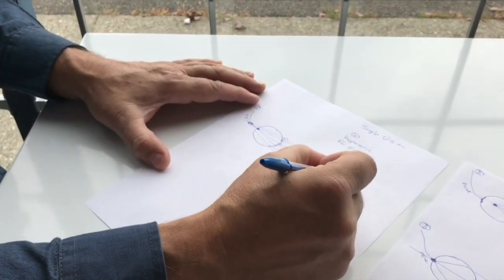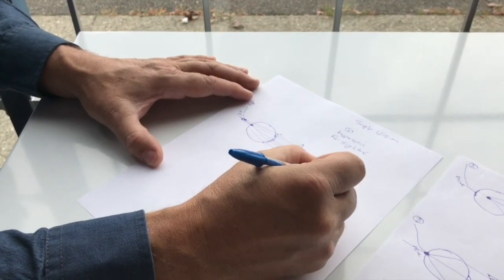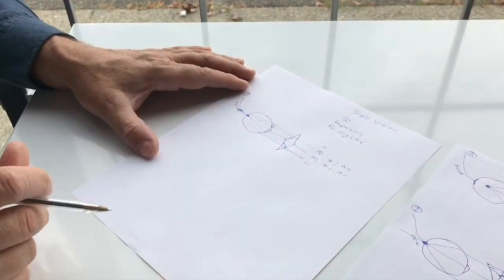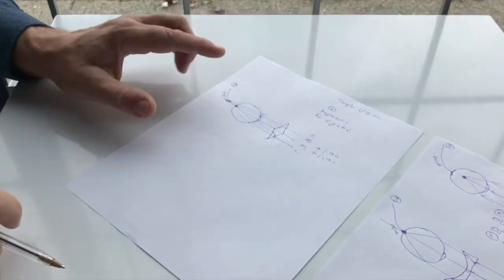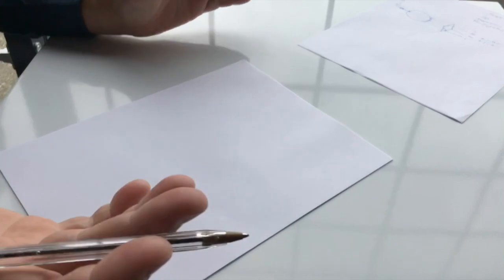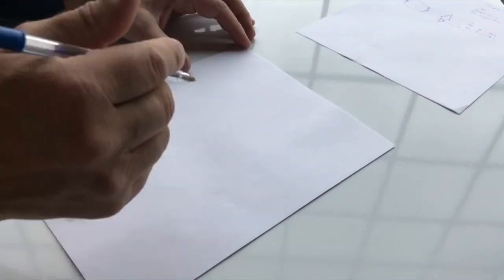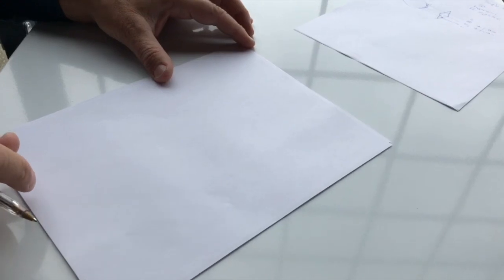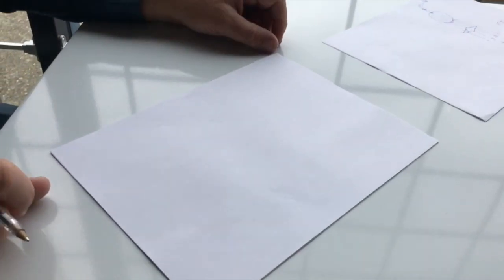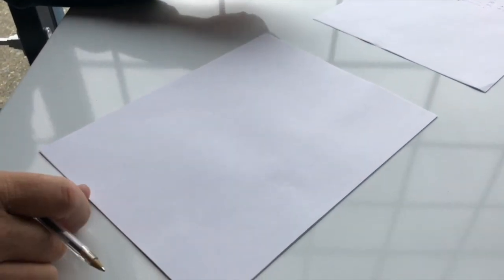And a plus prescription is something like plus one. OD is right. OS is left. So plus one in both eyes. That's what that would be. So, what we're going to talk about now is astigmatism in the eye. And astigmatism is extremely common. And it exists in most prescriptions.